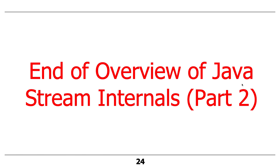That's the overview of the second part of stream internals. When we get to parallel streams, we'll go into a lot more detail about other aspects — like parallel splitterators and fork-join controls. But for now, this is good enough to get us through the next part.